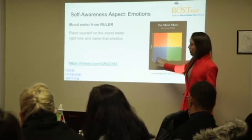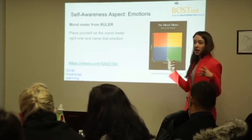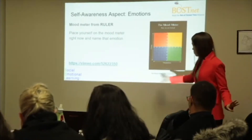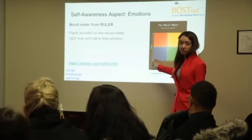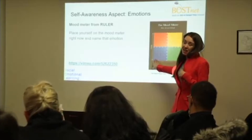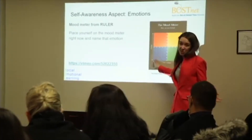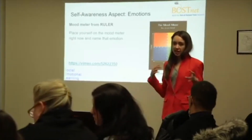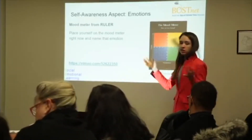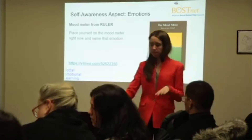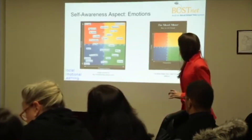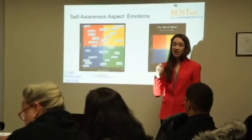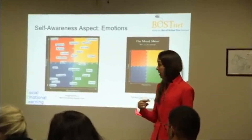Identifying where you are in these different areas can really help the program staff and other kids. It helps them understand — oh, she just wants to be by herself and she's good — or whether someone is sad and that's why they're by themselves. You can go further by talking with the kids and asking them to identify vocabulary for different areas and put those words on the mood meter.